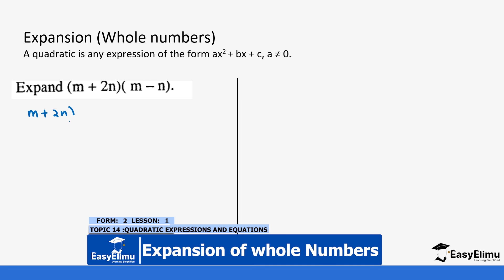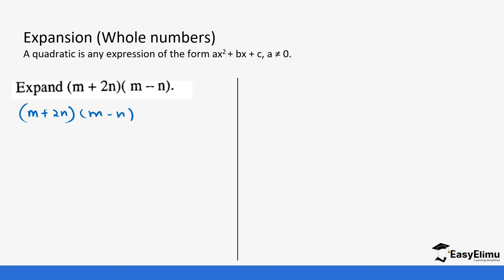This is m plus 2n into bracket m minus n. The first method you can use is to use the first expression to multiply the second expression. So we have m into bracket m minus n. And then since there is a positive here we put the same positive, and then 2n times m minus n. The first value m comes here with the second expression in a bracket, and the 2n follows with the second expression also in a bracket.